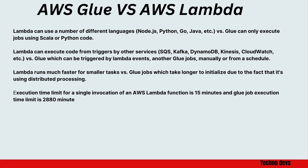The last topic is the difference between AWS Glue and AWS Lambda. Lambda can use a number of different languages — Node.js, Python, Go, Java, etc. — versus Glue, which can only execute jobs using Scala or Python code.